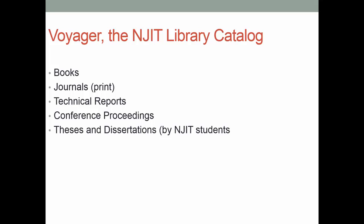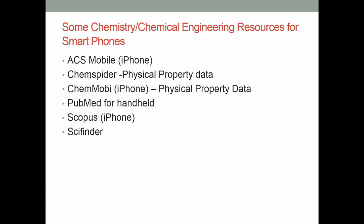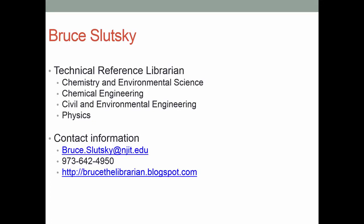Voyager is the NJIT library catalog. When submitting a request through interlibrary loan, always submit complete information — incomplete information will just delay your request. There are also apps on phones — ACS Mobile, ChemSpider, and so on — if you like to search for information on your phone. My name is Bruce Slutsky; I have a degree in chemistry and I'm very happy to help you with your research needs at the NJIT Library. Here's my email and phone number.